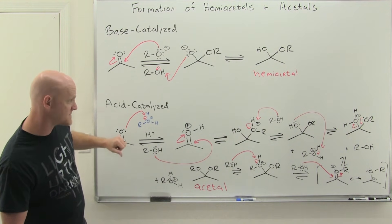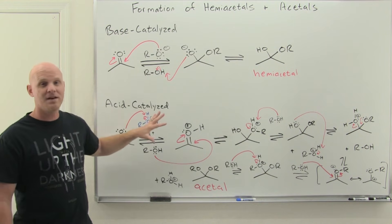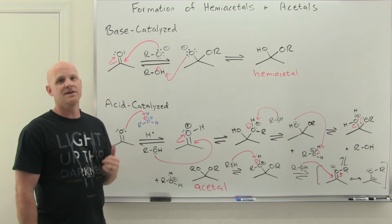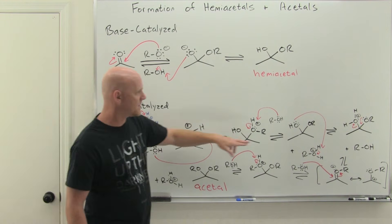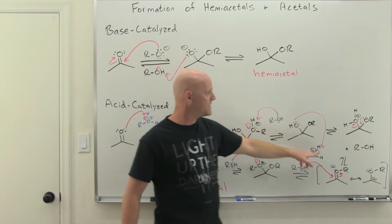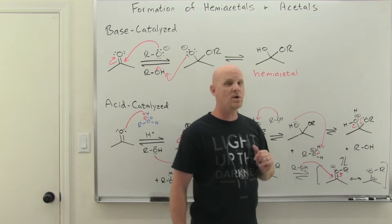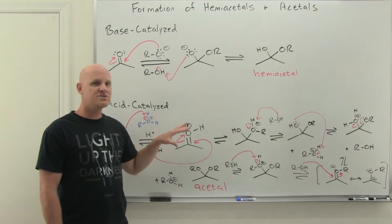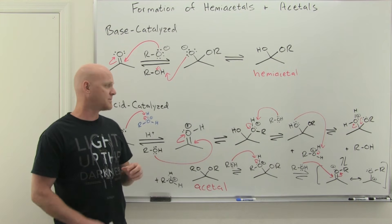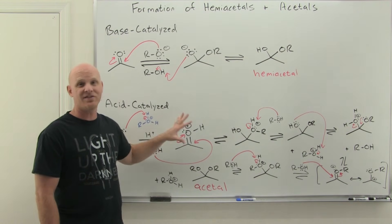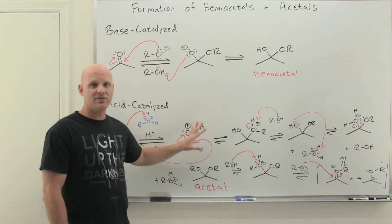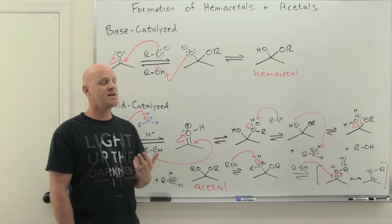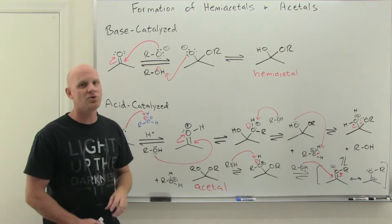This pattern of protonating poor leaving groups will be common throughout this chapter and the carboxylic acid derivatives chapter as well. The acid-catalyzed mechanisms can get ugly and messy, but the big takeaway is: if you want something to leave to get to your desired product and it's not a good leaving group, then protonate it — that's probably what you'll be doing along the way.